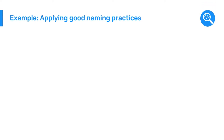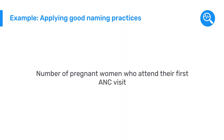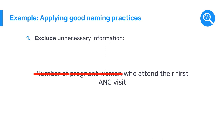Let's see what this looks like with an example. We would like to apply good practices to the naming of the data element 'number of pregnant women who attended their first antenatal care visit.' First, we can exclude 'number of' — we understand that we are referring to numbers in the realm of aggregate data collection unless specified otherwise. We also don't need to mention 'pregnant women' since antenatal care visits only concern pregnant women. We can also cut out 'who attended' as it is assumed.